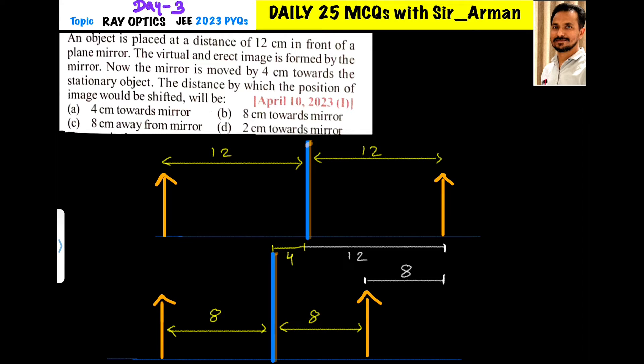Now, we know that the original image in the first case was at a distance of 12 cm from the mirror. From the new position of the mirror, the original image is at 12 plus 4, which equals 16 cm. This means the new distance between the mirror and the old image is 16 cm.